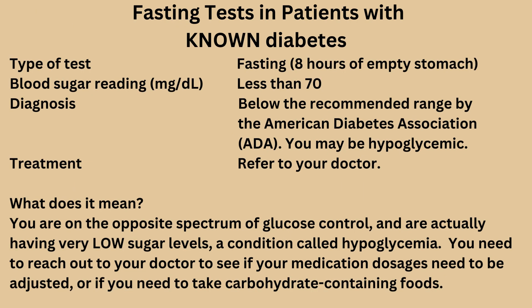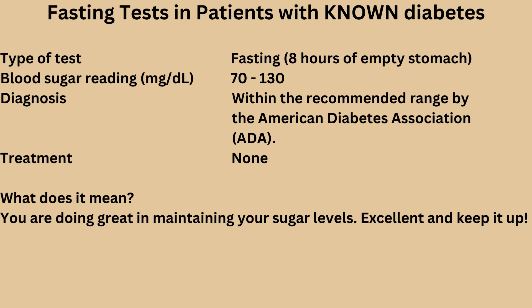If you are a patient with known diabetes and you took a fasting blood glucose test and got a reading below 70 milligrams per deciliter, then you are below the range recommended by the ADA. This means you are on the opposite spectrum of glucose control and are actually having very low sugar levels — a condition called hypoglycemia. You need to reach out to your doctor to see if your medication dosages need to be adjusted or if you need to take carbohydrate-containing foods.